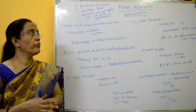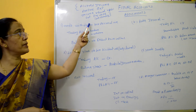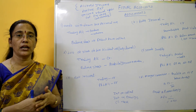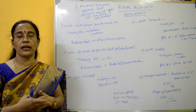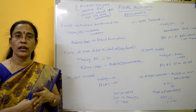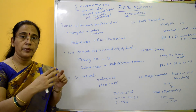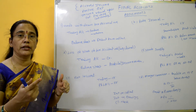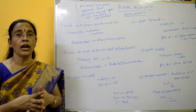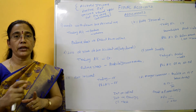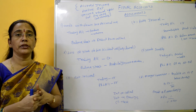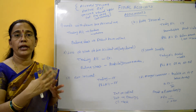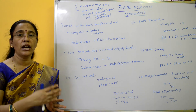Next is expenses payable — also called outstanding expenses — such as wages outstanding, salaries outstanding, interest payable. We add these to the particular year's expenses on the debit side of the profit and loss account, and they appear as a liability on the balance sheet.